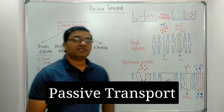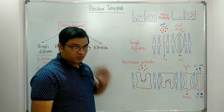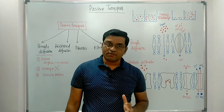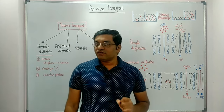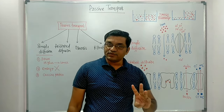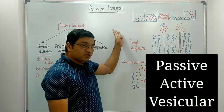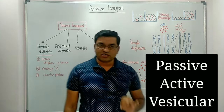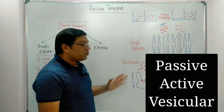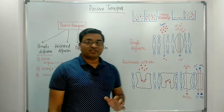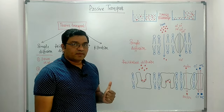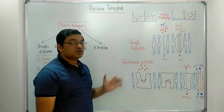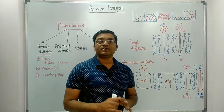Hello friends. Today's topic of discussion is Passive Transport, one of the types of transport across the cell membrane. Transport across the cell membrane is divided into three main types: Passive Transport, Active Transport, and Vesicular Transport. Today's topic is Passive Transport, which may appear as a short note in university examinations. Active Transport is also a short note, and Transport across the cell membrane is a long answer question.